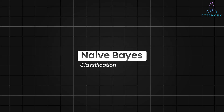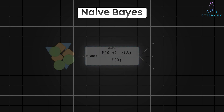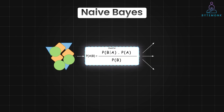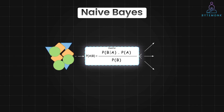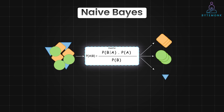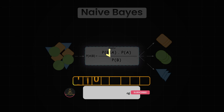Naive Bayes is a type of classification algorithm based on Bayes theorem. The naive part comes from the assumption that all features are independent of each other given the class. In other words, Naive Bayes assumes that the presence or absence of one feature doesn't affect the probability of another feature being present or absent. This assumption simplifies the calculation significantly, making Naive Bayes a computationally efficient algorithm.